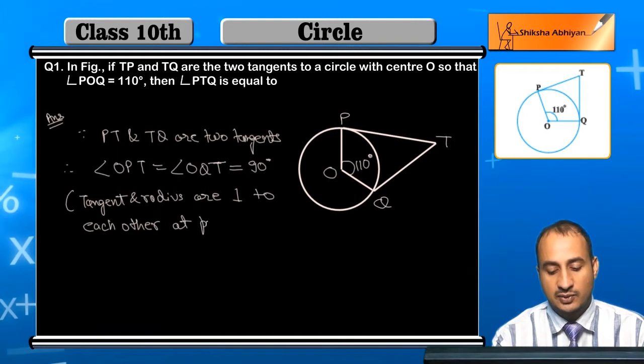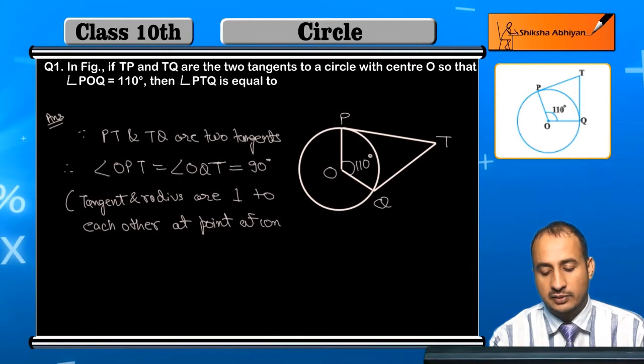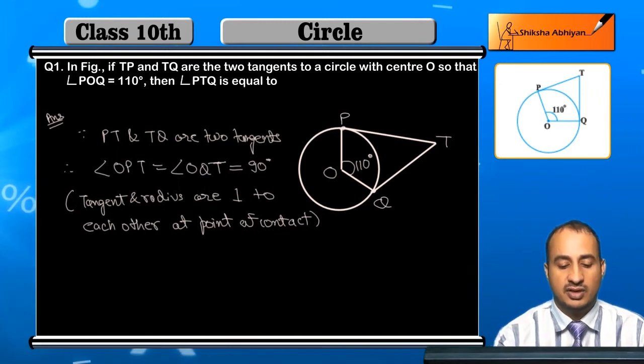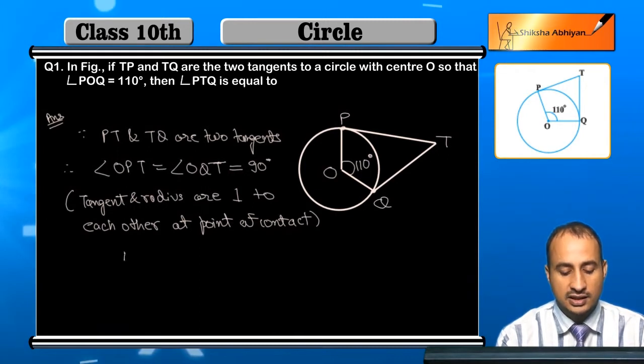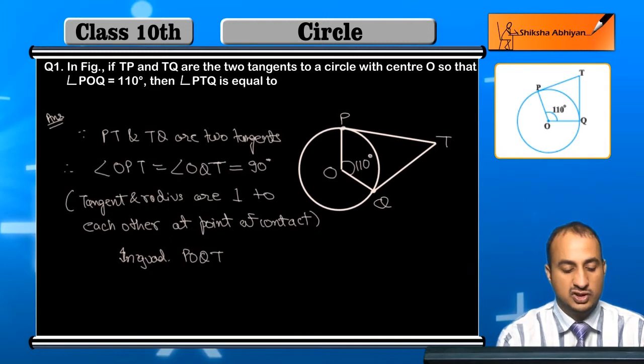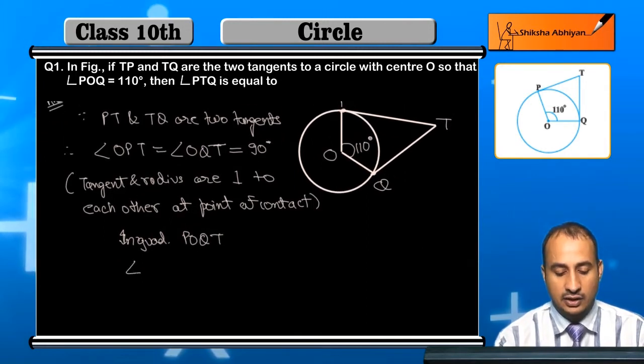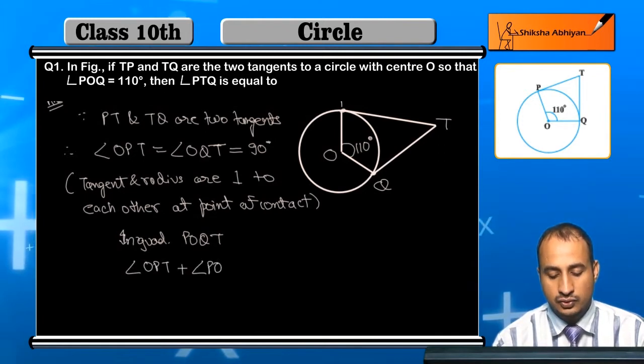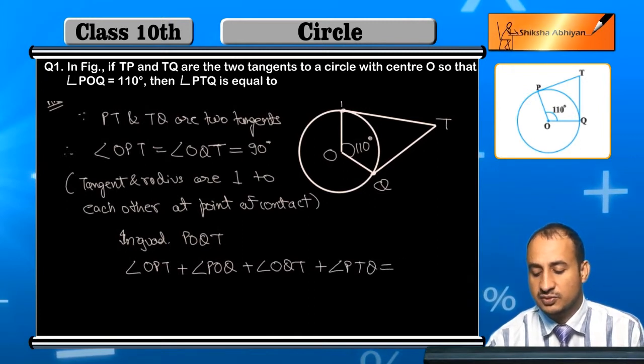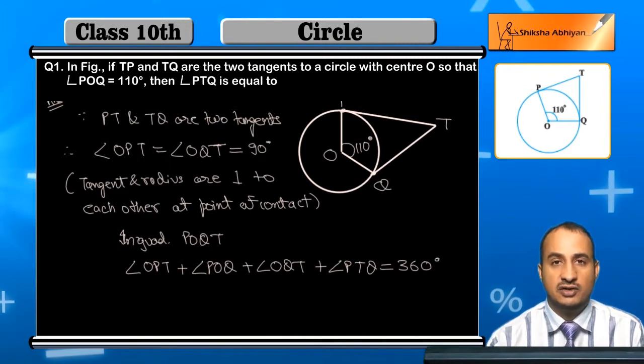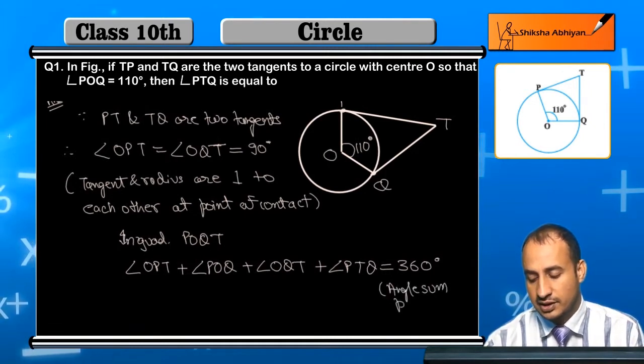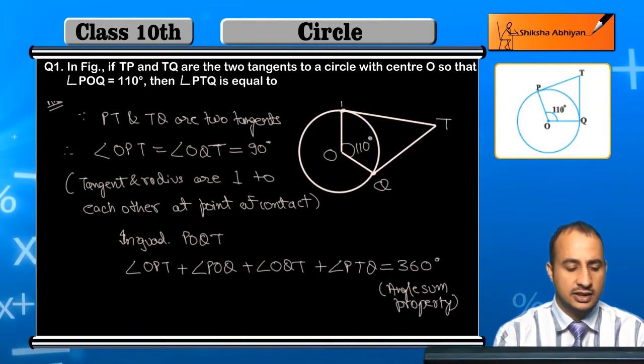This is the point of contact. So in quadrilateral OPTQ, angle OPT plus angle POQ plus angle OQT plus angle PTQ is equal to 360 degrees by angle sum property of quadrilateral.